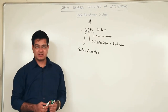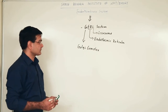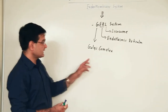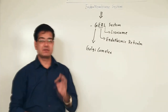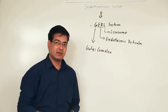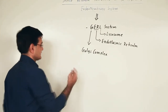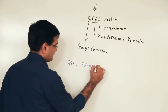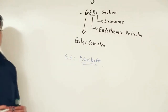The three main cell organelles are the Golgi complex, endoplasmic reticulum, and the lysosome. Along with these three organelles, the vacuole is also present within the cell and is also a part of the endomembrane system. Scientist Novikov discovered this endomembrane system.